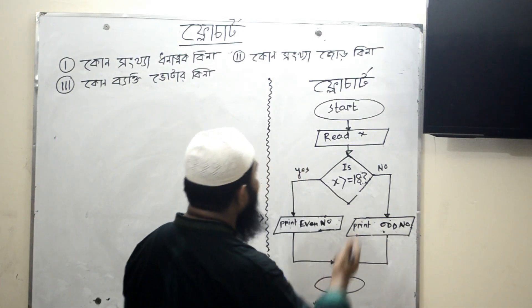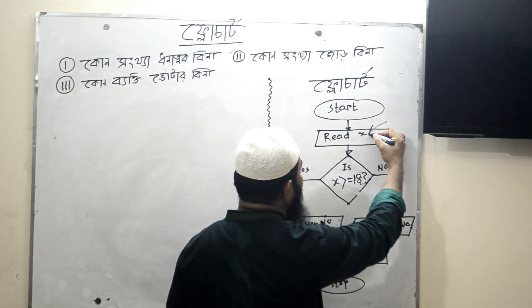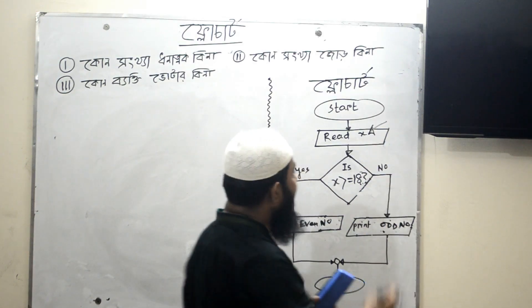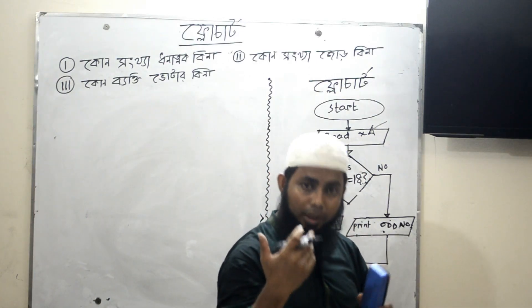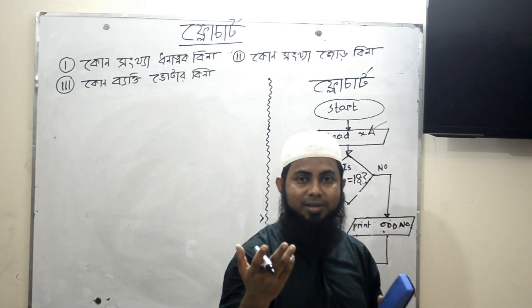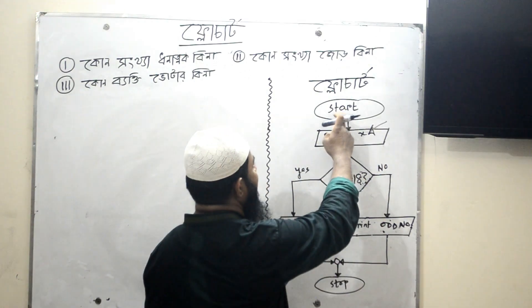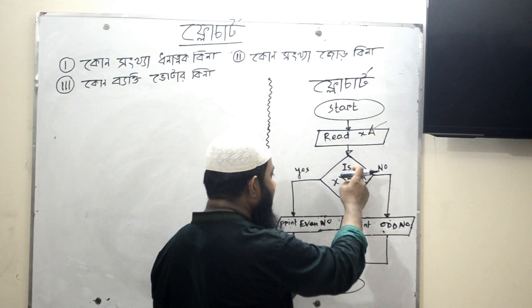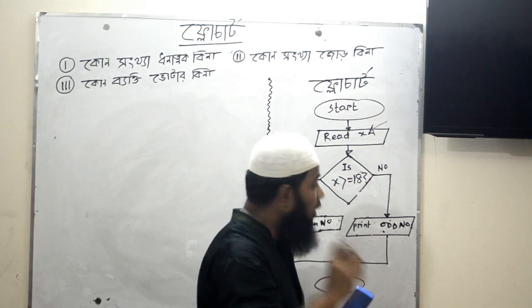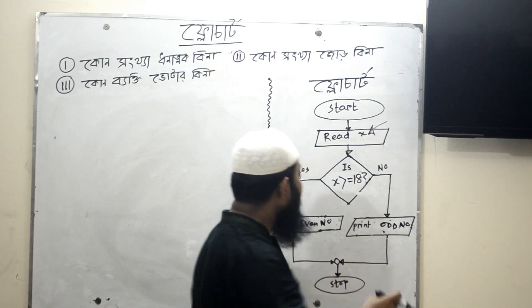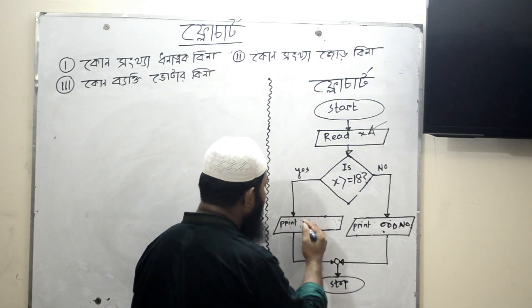So let's start with: read x. We write y for yes. Start, read x. Is x equal to 18? We write y for yes. We write print x.